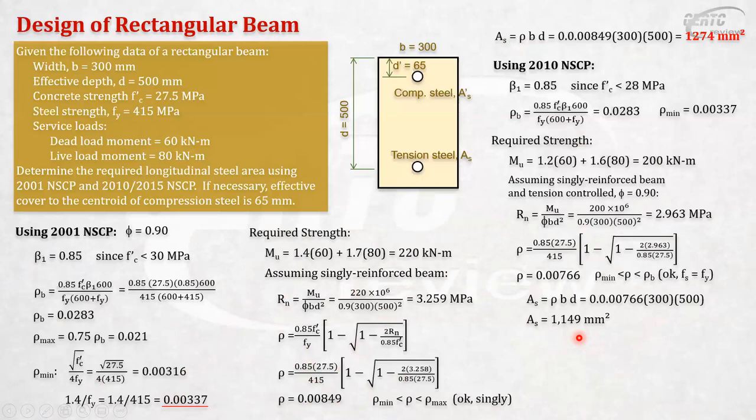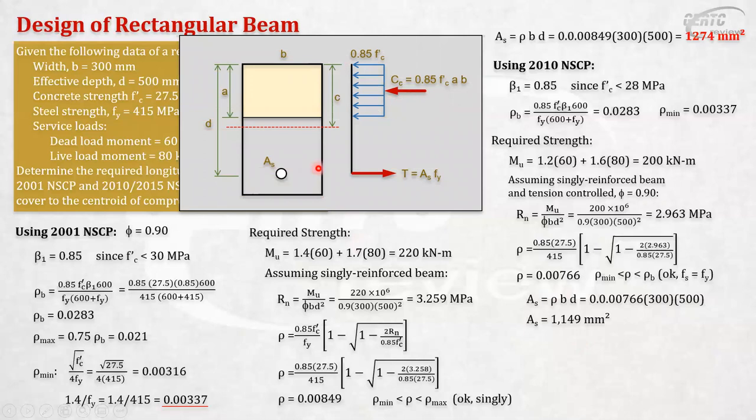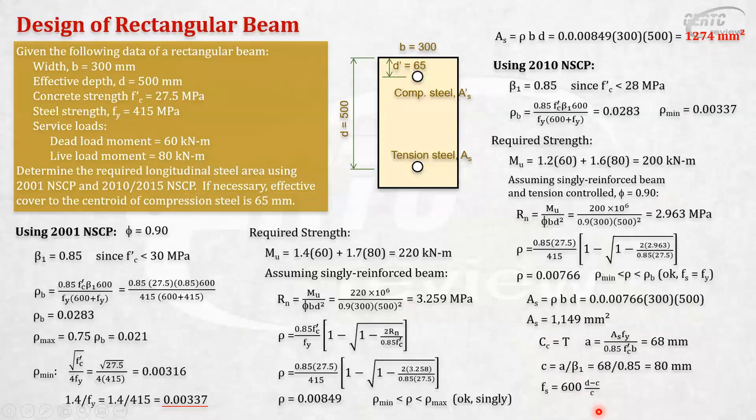Because to know if we really use 0.9. So, to get As, fs, you have to solve for C and you have to solve for A. So, let's consider this diagram. I know you're very familiar with this. So, this is the compressive force in concrete and the tension in steel. Okay. So, equating that, compressive force in concrete equals tension in steel, our purpose is to get A. We can get A. You can see that here, As fy over these terms. Okay. So, our A is 68 mm. Then, we can solve for C. A over beta 1. Okay. So, that will give you 80 mm. Then, after that, we can solve for the stress in tension steel.